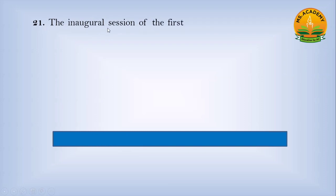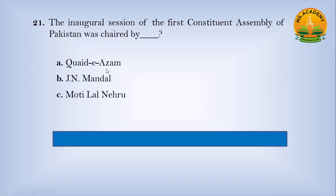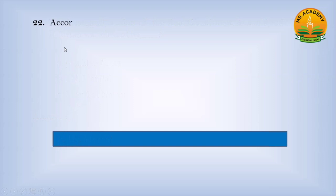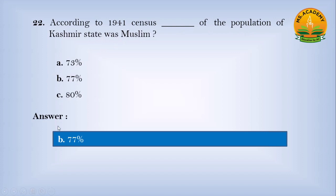The inaugural session of the First Constituent Assembly of Pakistan was chaired by: Option A, Motilal Nehru. Answer: J.N. Mandar. According to the 1941 census, what percentage of the population of Kashmir state was Muslim? Option A, 73%; Option B, 77%; Option C, 80%. Answer: B — 77%.